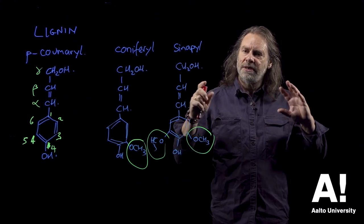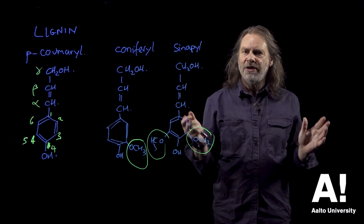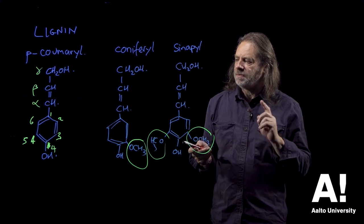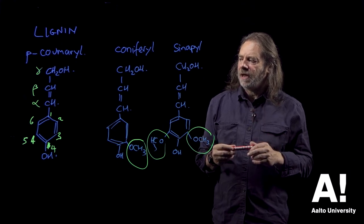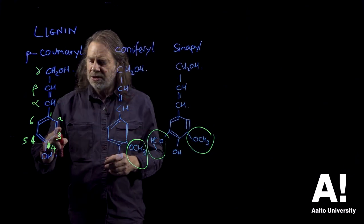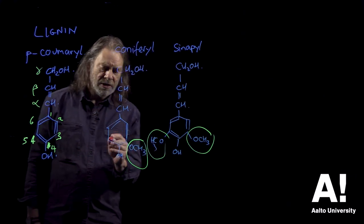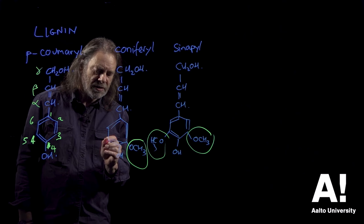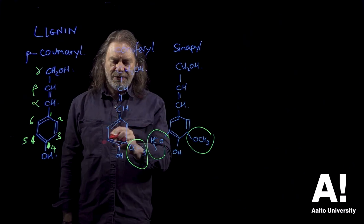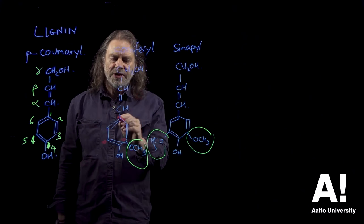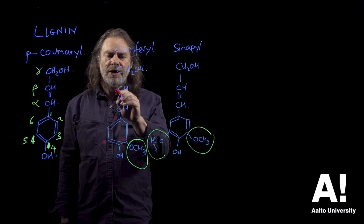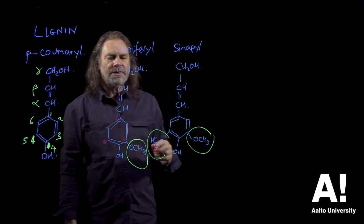But basically the lignin molecule that forms is a completely random structure, and the free radical that's generated by the enzymes put free radicals at certain positions, or certain positions are much more likely to have a free radical on them, which has got something to do with the electronic structure of the molecule. So what I'm drawing in red here is where the free radical most likes to sit.